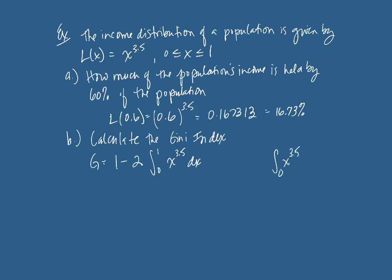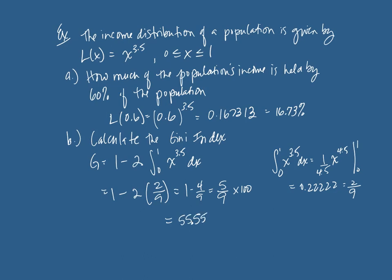And so when you integrate 3.5 plus one is 4.5 divided by 4.5, and we go from zero to one. So when I calculate this, when I plug in one, basically we get the answer one divided by 4.5. So one divided by 4.5 is 0.2222 repeating, which is in other words two ninths. And when I plug in zero, I get zero. So this is one minus two times two ninths or one minus four ninths. And so the Gini index is five ninths. So that's well over 50%. So if we multiply that by a hundred to get our Gini index, our number between zero and a hundred, that would be 0.55 repeating. So that would be 55.55 would be our Gini index.